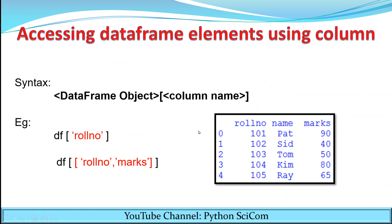Now suppose you want to print data column-wise. For example, you need the role numbers of all students, or you need a list of names. That can be done using the syntax: DataFrame name and in square brackets write the column name you want to display. For example, if I write df['role number'], I am accessing the role number column.